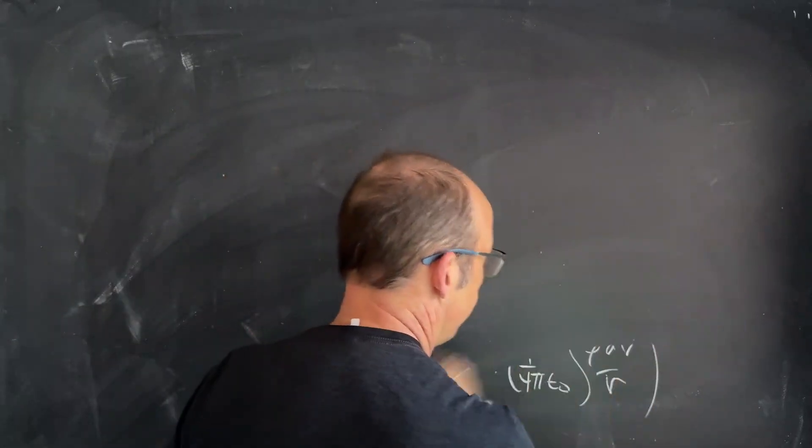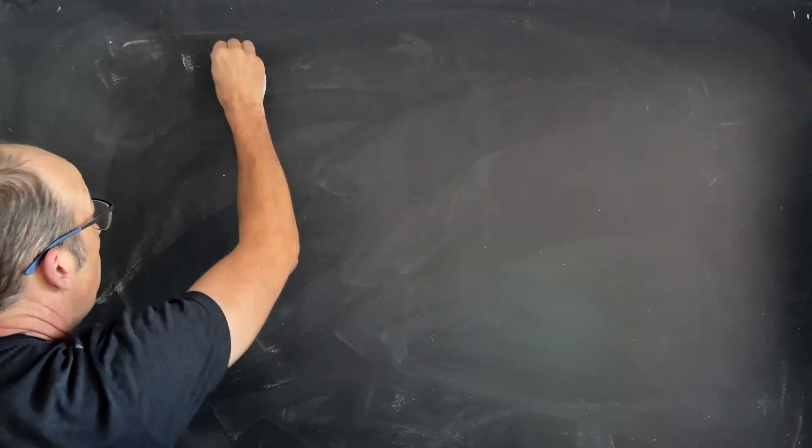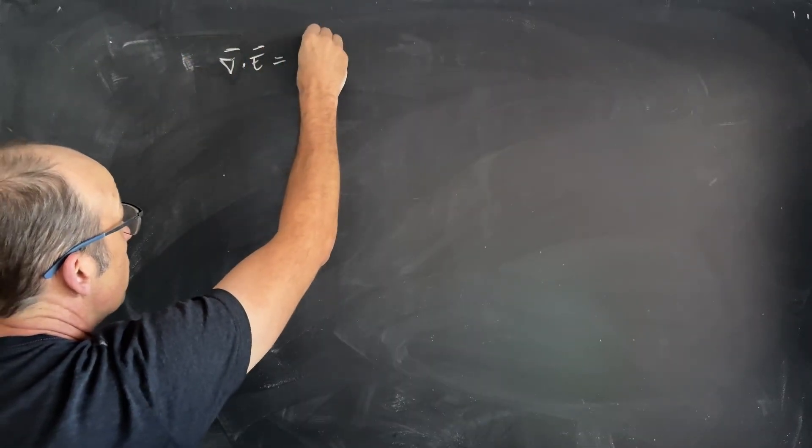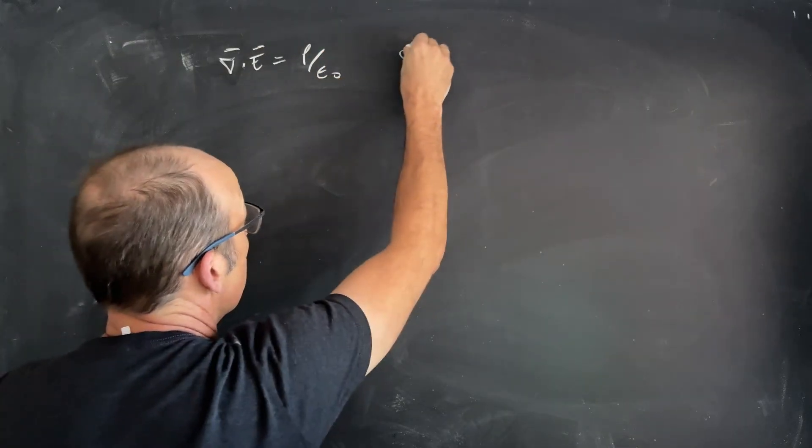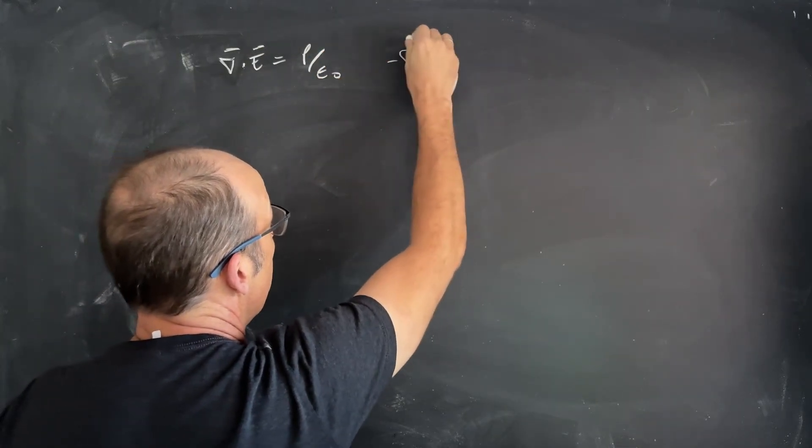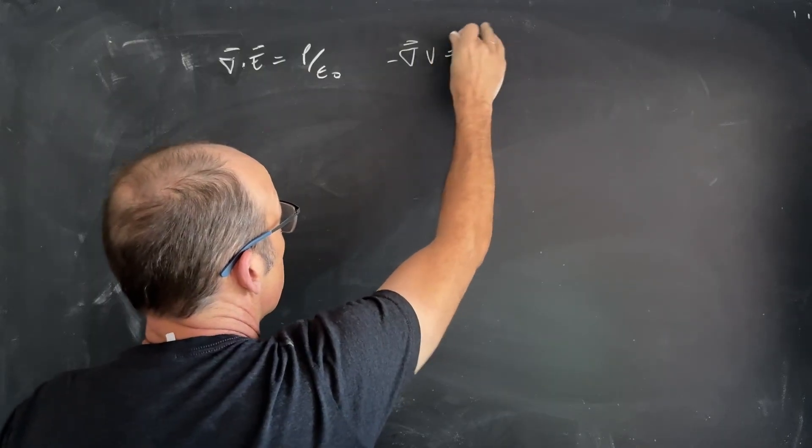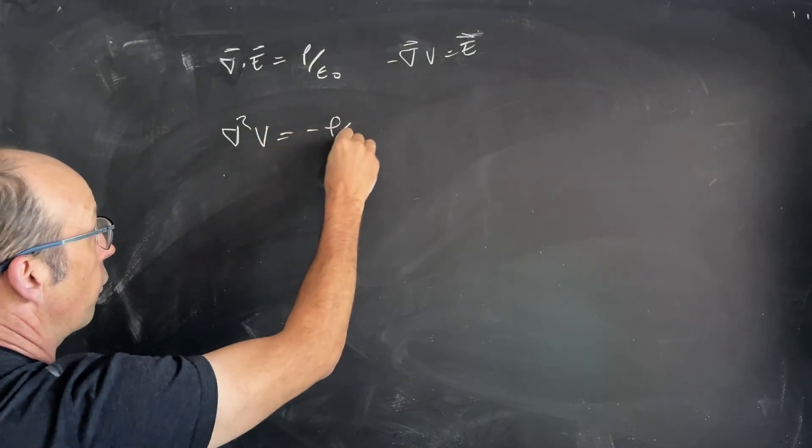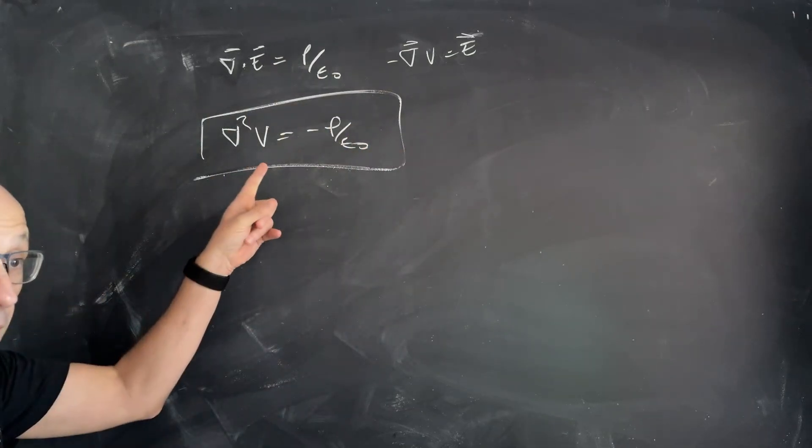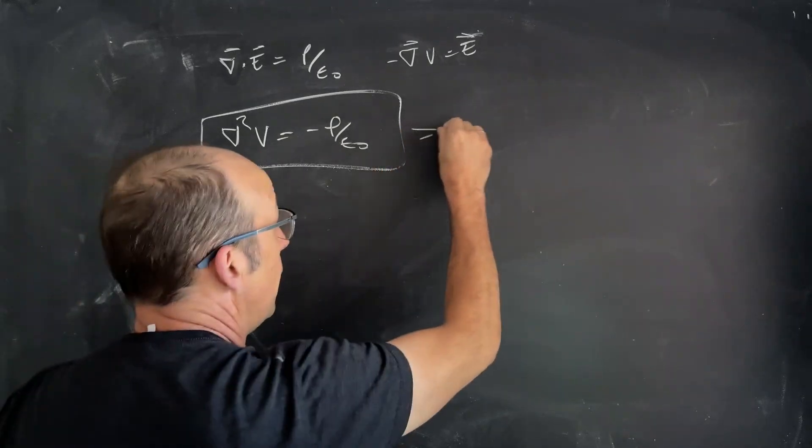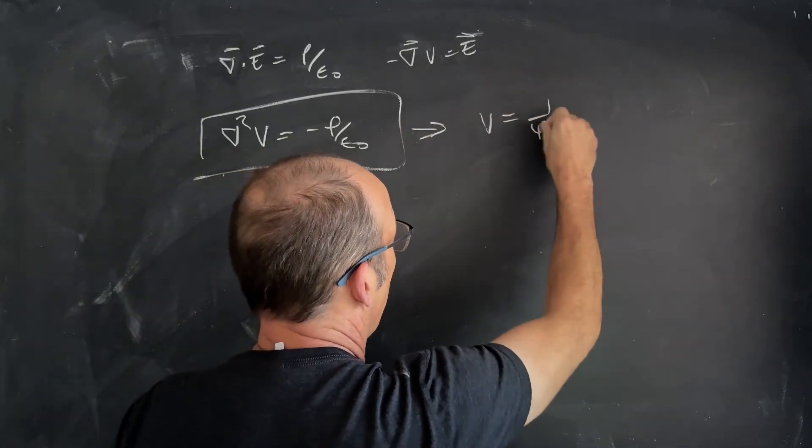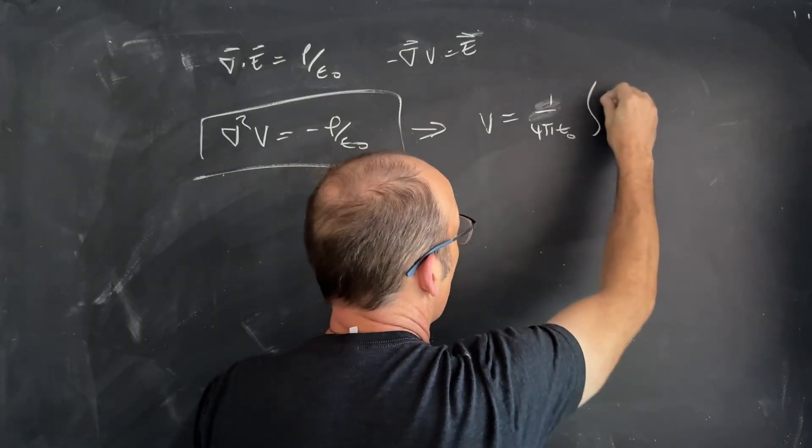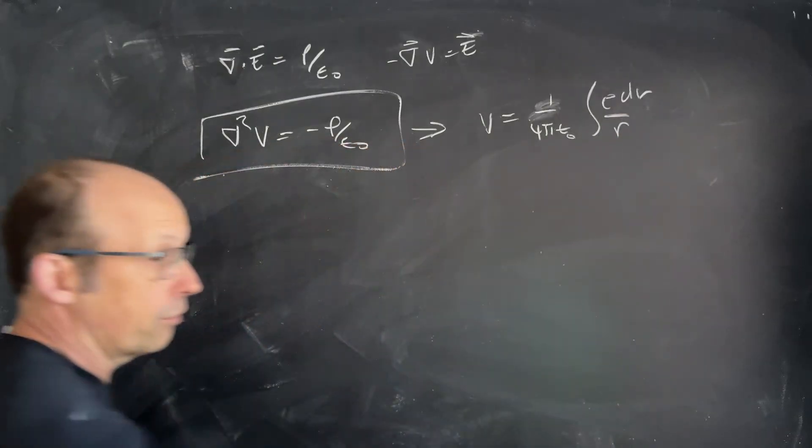Remember, Gauss's Law, let's put those two things together. So, I have Gauss's Law. Del dot E is the charge density over epsilon naught, and negative Del V is equal to E. So, if I put that in here, I get Del squared V is negative rho over epsilon naught. That's important. But, if that's true, then V is one over four pi epsilon naught rho DV over R. Those two things go together.